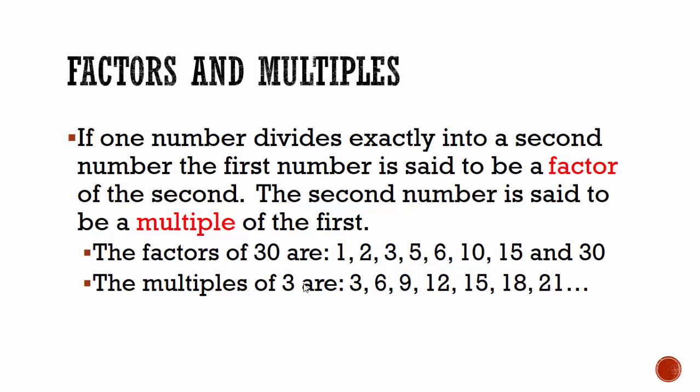Factors and multiples. If one number divides exactly into a second number, the first number is said to be a factor of the second. The second number is said to be a multiple of the first.